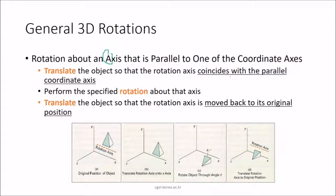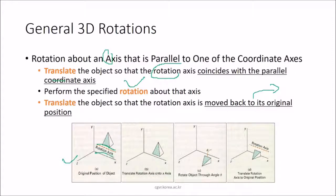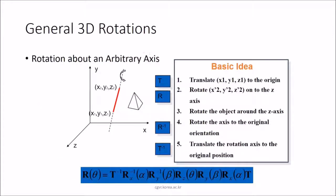For general 3D rotations about an axis parallel to a coordinate axis, the procedure is: first translate the object so the rotation axis coincides with the parallel coordinate axis, then perform the specified rotation about that axis (x or y), then translate the object back to its original position. This is illustrated with a rotation axis parallel to the x-axis being translated onto the x-axis, rotated by theta, then translated back.